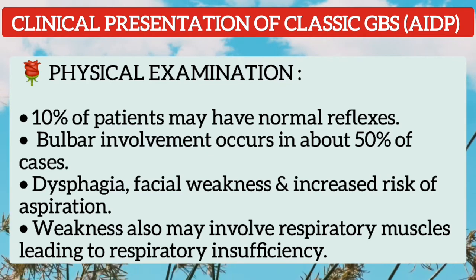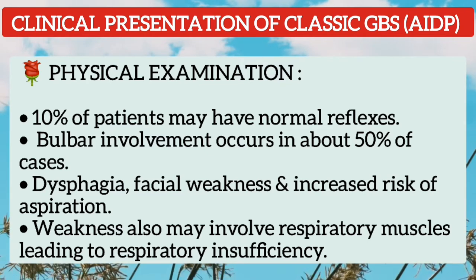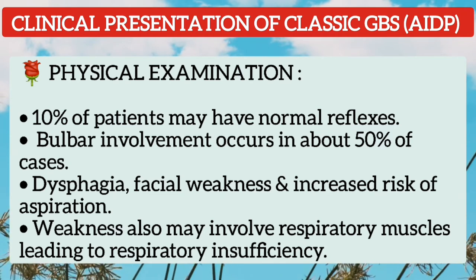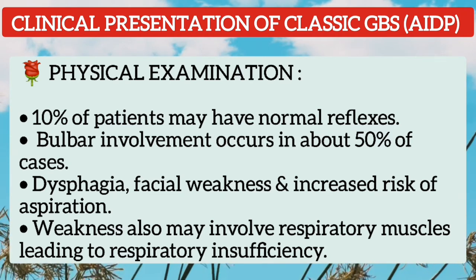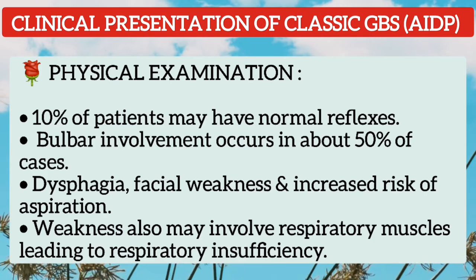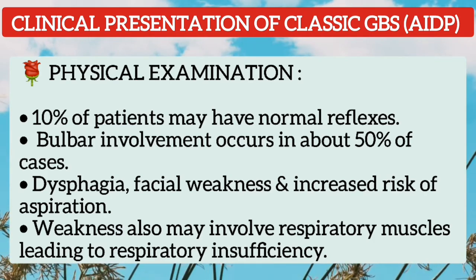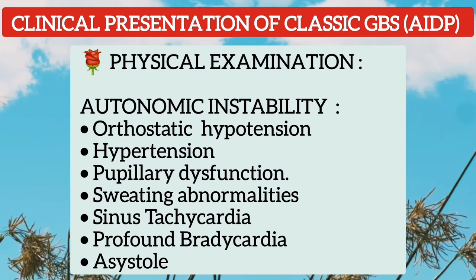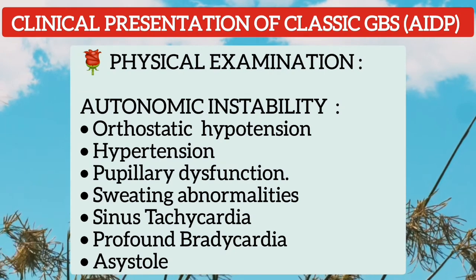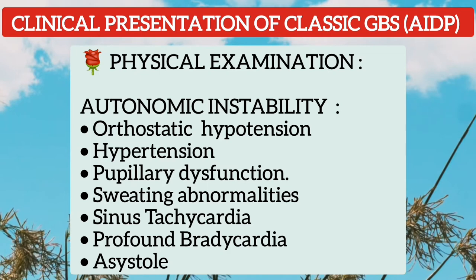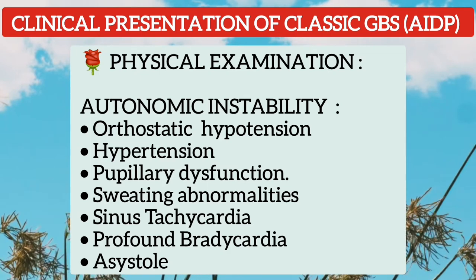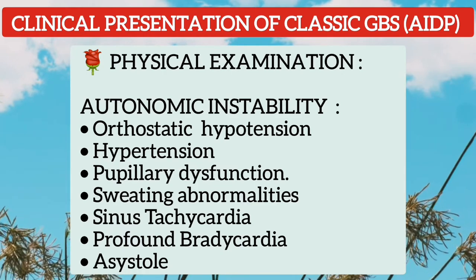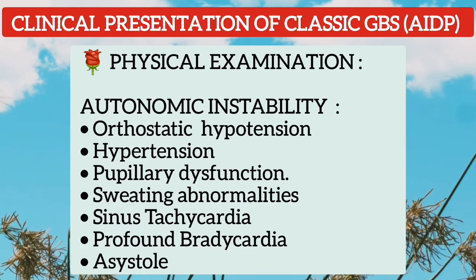Bulbar involvement occurs in about 50% of cases, with dysphagia, facial weakness, and increased risk of aspiration. Weakness may also involve the respiratory muscles, leading to respiratory insufficiency. Occasionally there is autonomic instability, including orthostatic hypotension or hypertension, pupillary dysfunction, sweating abnormalities, sinus tachycardia, profound bradycardia, and occasionally asystole.